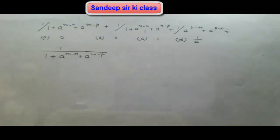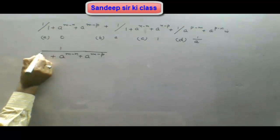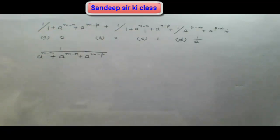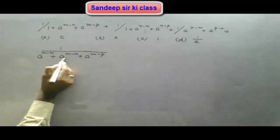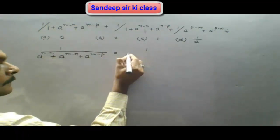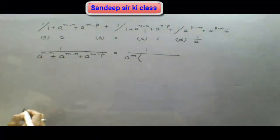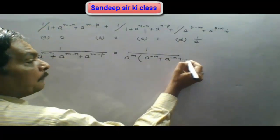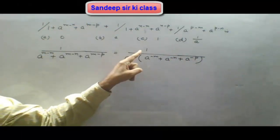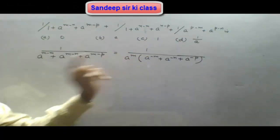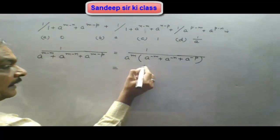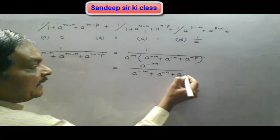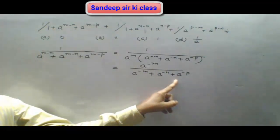We find that 1 is written, and any number raised to the power 0 is 1. So we write this 1 as a^(m-m). We can then write a^m taken as a common factor in the bracket, giving a^m times (a^(-m) plus a^(-n) plus a^(-p)) in the denominator. Simplifying the first term, we get a^(-m) divided by (a^(-m) plus a^(-n) plus a^(-p)).